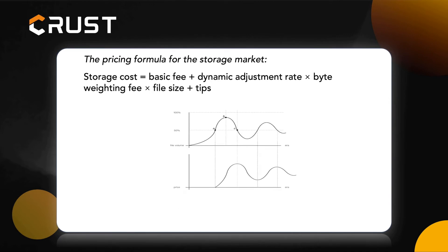The upper part of the chart represents the utilization rate of the storage resources across the network, and the lower part represents the price of the order. When the storage utilization rate of the whole network is high, the order price will increase. When the utilization rate of the entire network reaches a certain height, the order price will begin to drop. The price fluctuation of storage will become smaller and smaller, and finally will stabilize at a price accepted by the market.